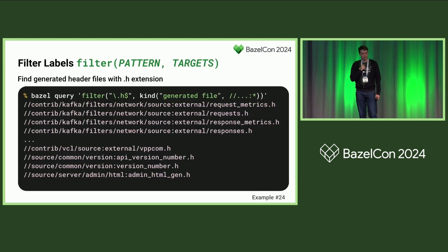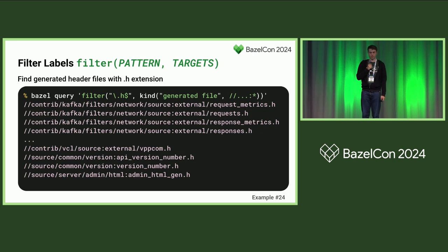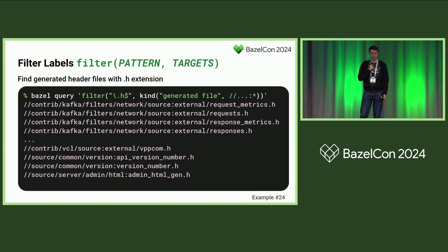Next is the filter() function — it works just like grep, and you can use grep instead. But if you're feeding results into another query, it might be more efficient to use filter(). Here I use it to find all generated header files. I use the trick of three dots and a star to get all files rather than just targets, filter by kind generated_file, and lastly filter by the suffix .h.